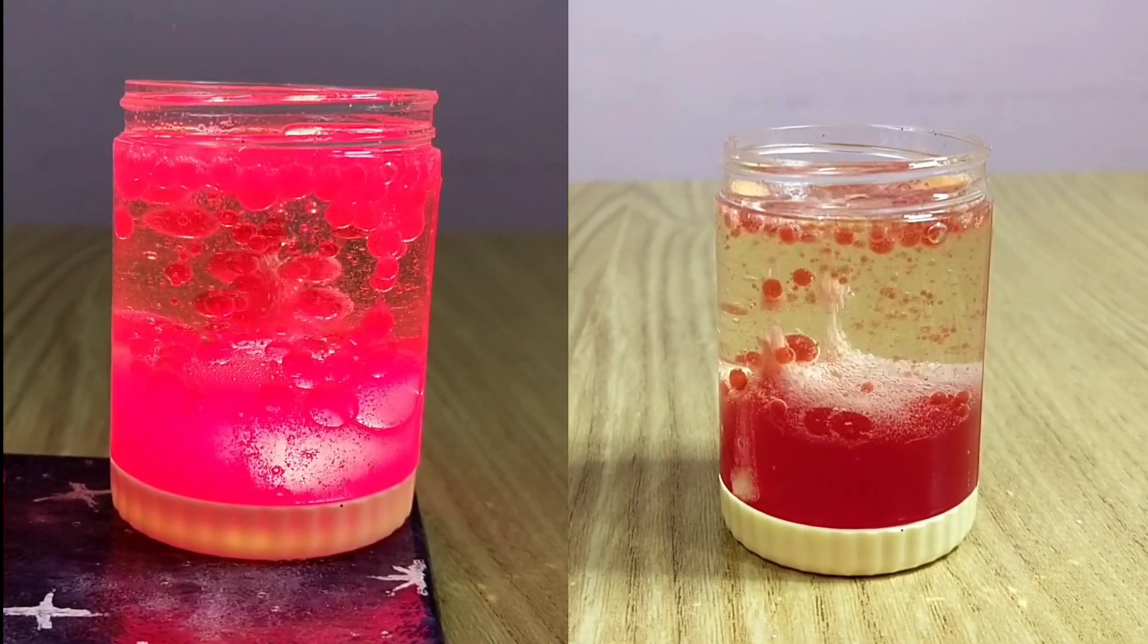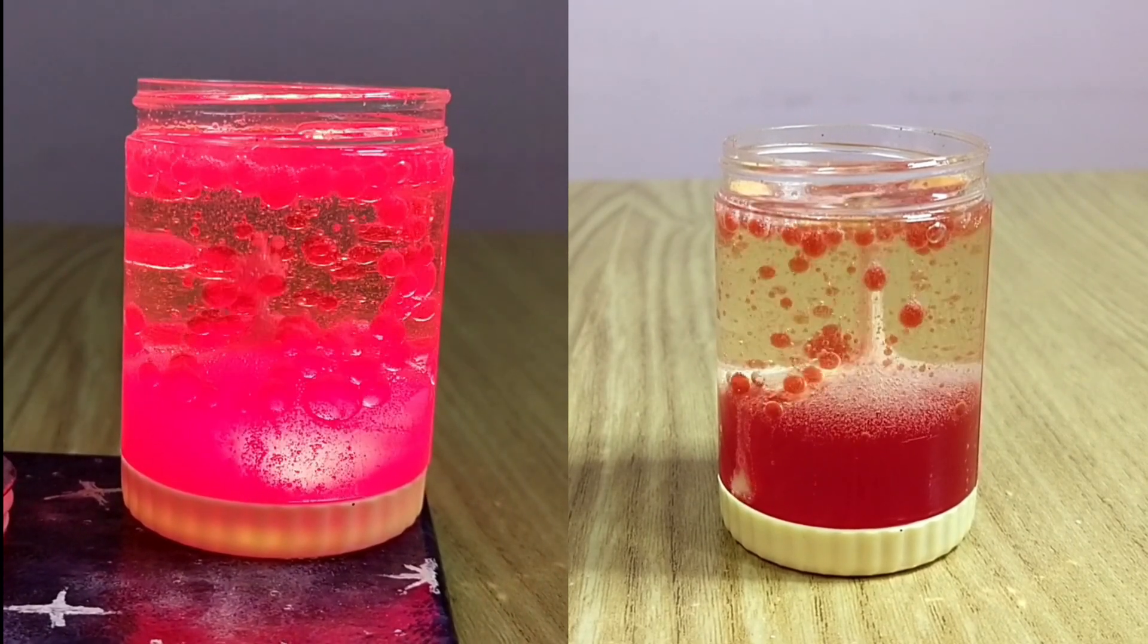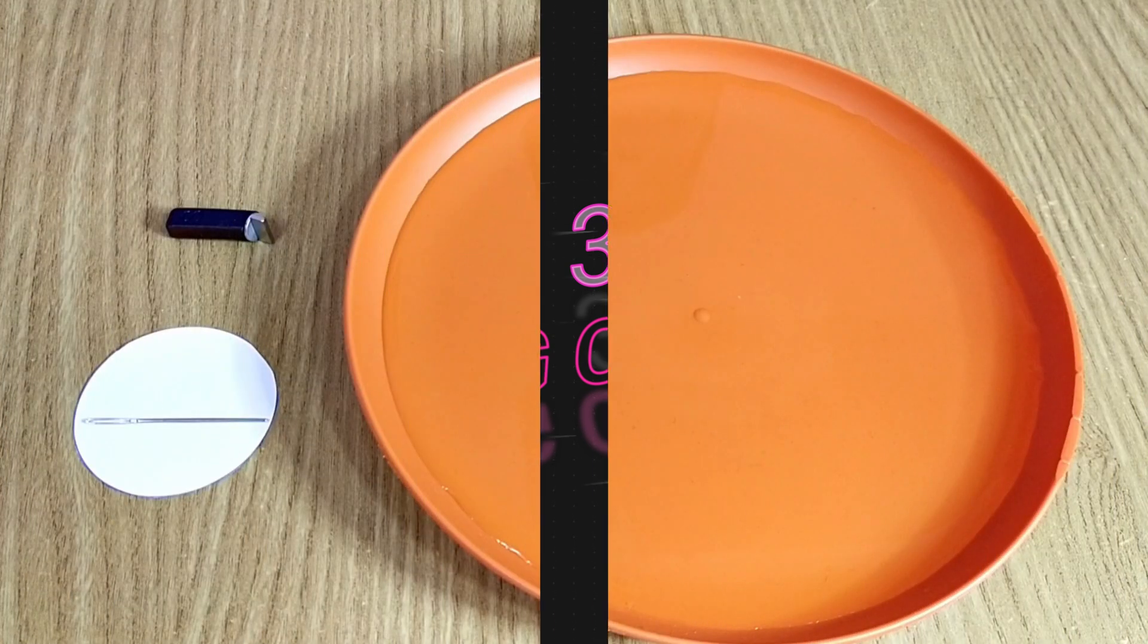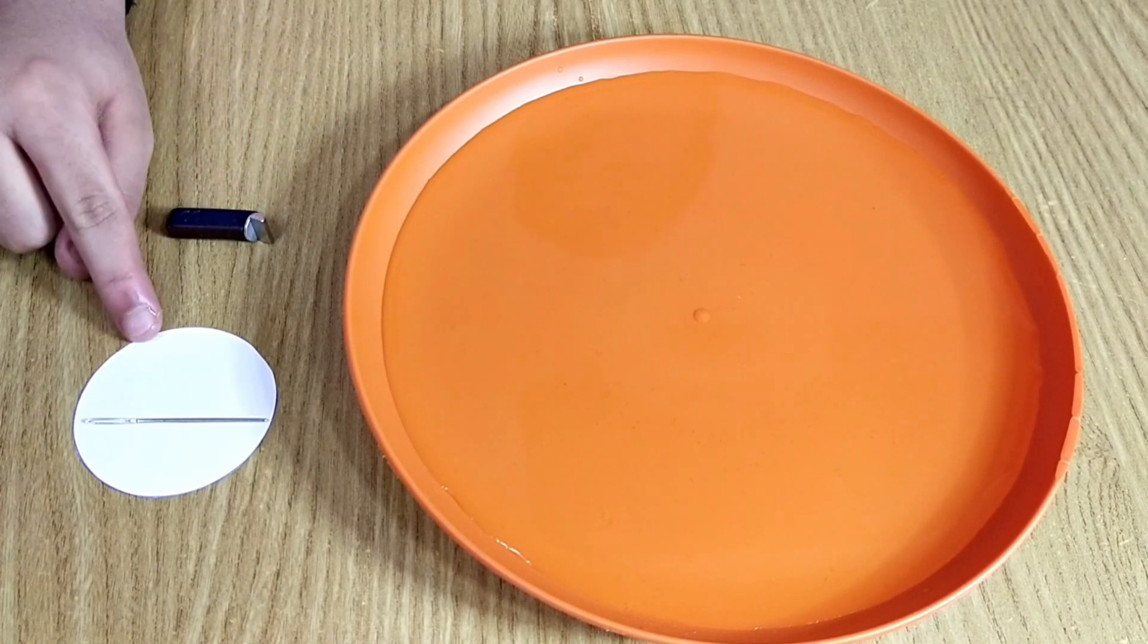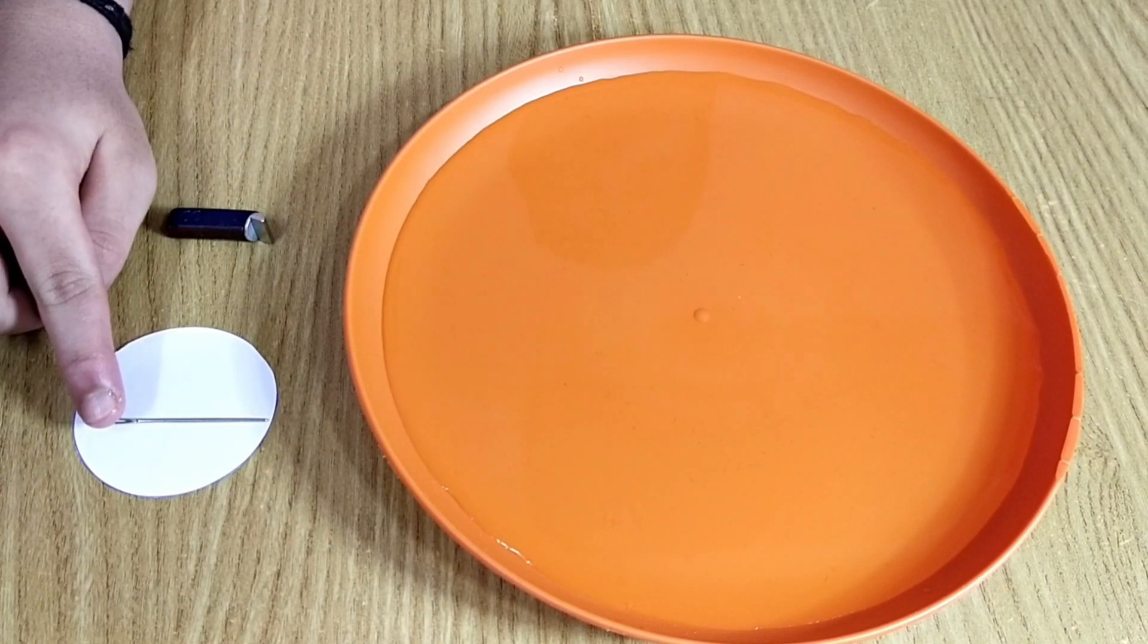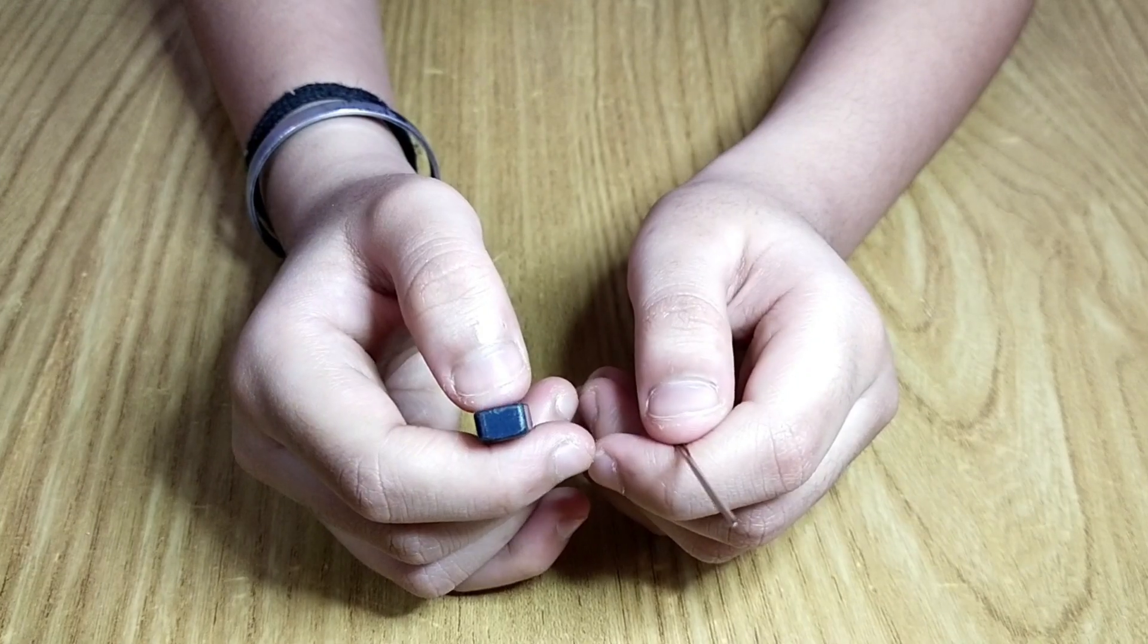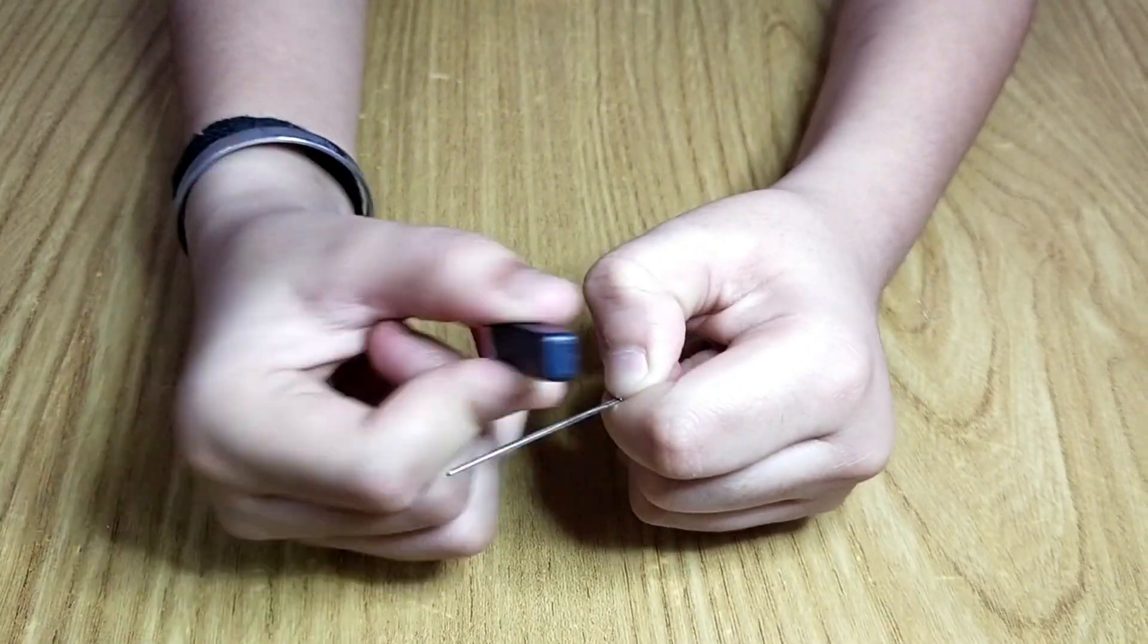Now let's make a floating compass. For this we need a magnet, piece of paper, needle, and a bowl or plate of water. Rub the needle with the magnet 30 to 40 times to magnetize it.